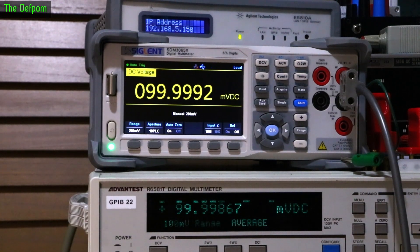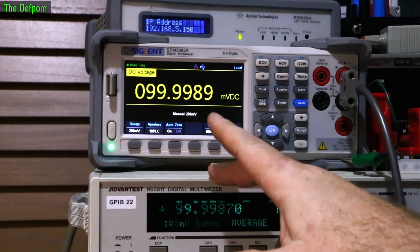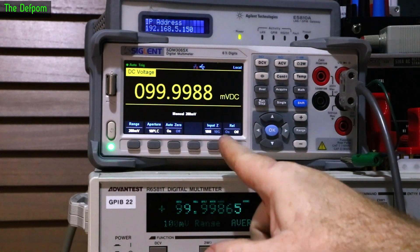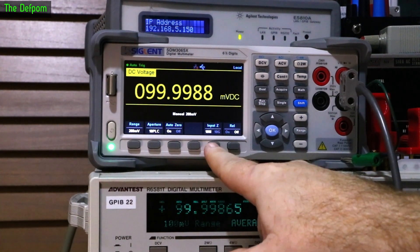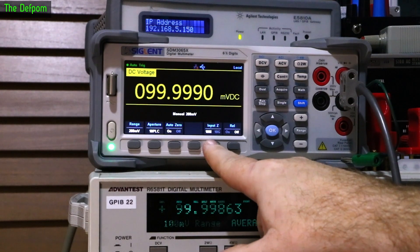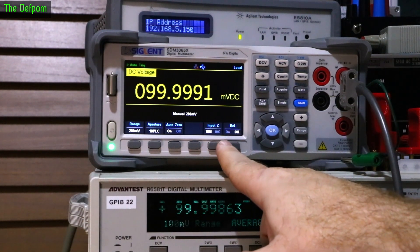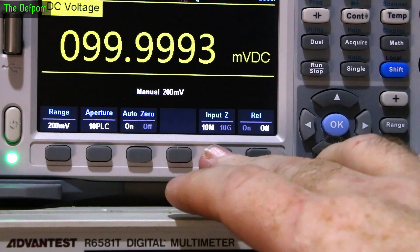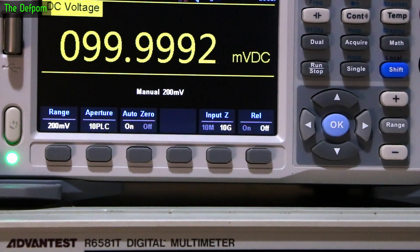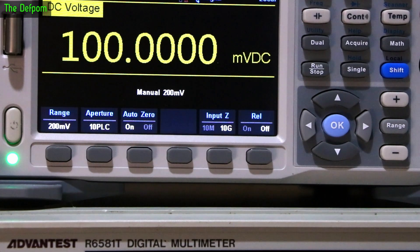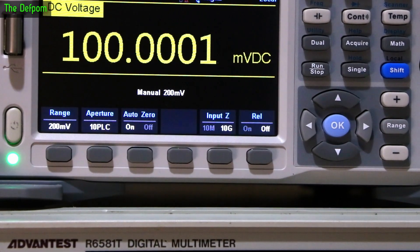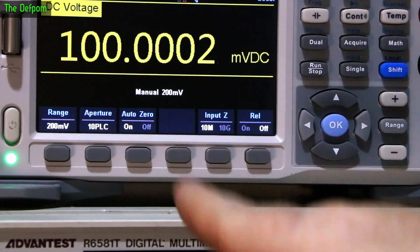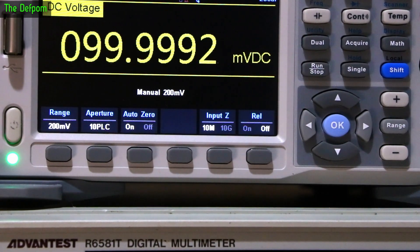I thought I'd show you one more thing. On this particular meter, I think only the 3065X has got it - input Z, input impedance. It's currently set to 10 meg. On this one you can actually do 10 gig. Watch this meter reading when I go to 10 gig instead. See, just doing that can affect your readings. Certainly consider that. But as long as it's calibrated to the way you're going to use it, it shouldn't actually matter.